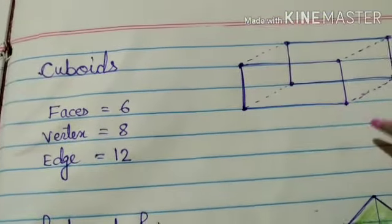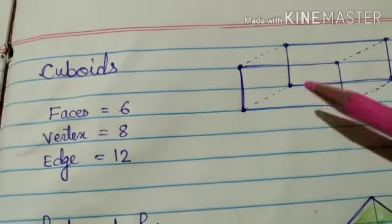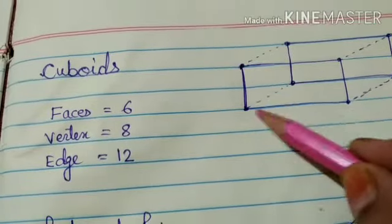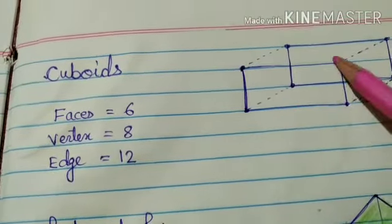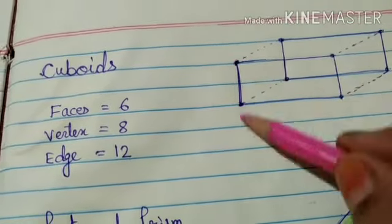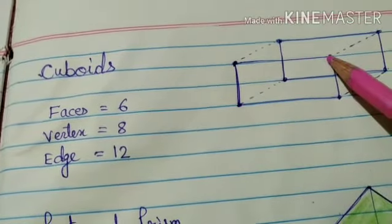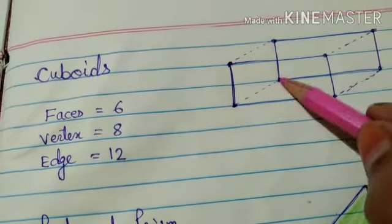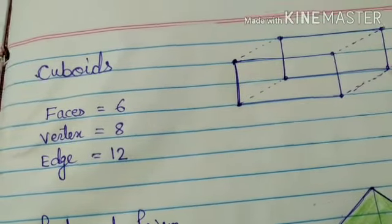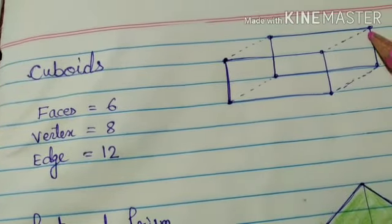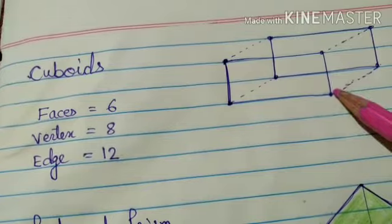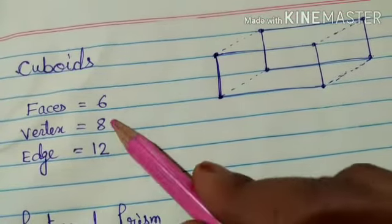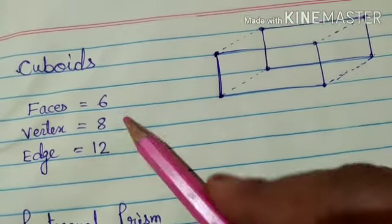Now how many vertices are there? So you can see in this rectangle: this is 1, 2, 3, 4 and in this 5, 6, 7, 8. So total 8 vertices are there.